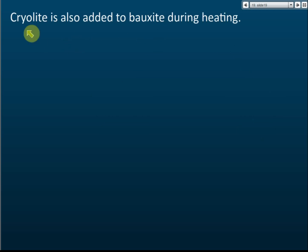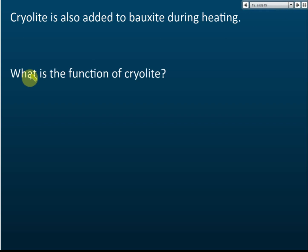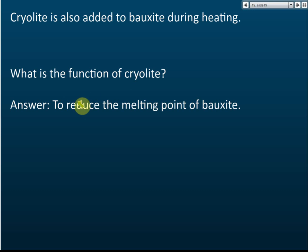In addition to Bauxite, we add Cryolite to the electrolyte. In the exam, they may ask you why we need to add Cryolite and what its function is. The function of Cryolite is to reduce the melting point of Bauxite, so that the Aluminium Oxide melts more easily.